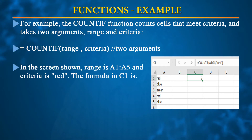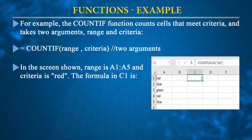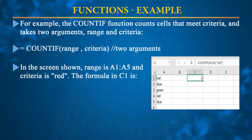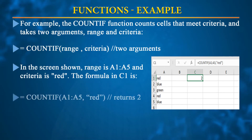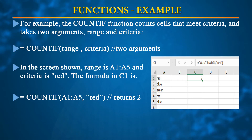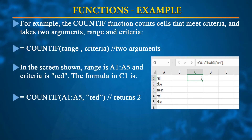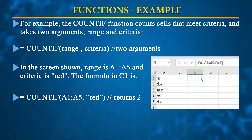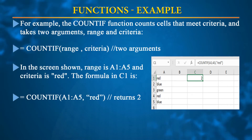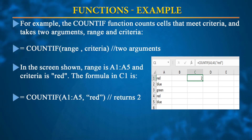In a COUNTIF example: column A contains red, blue, green, red, blue at cells A1 through A5. To count how many times red appears, select cell C1, type =COUNTIF(A1:A5,"red"). The function searches the range A1:A5 for the criteria "red" and returns 2, since red appears twice. The result 2 is reflected at position C1.